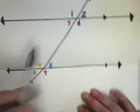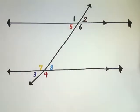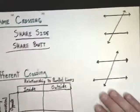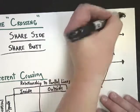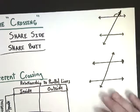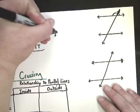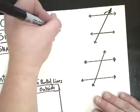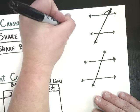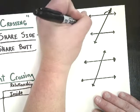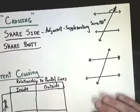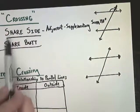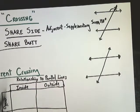If two angles share a crossing and they share a side, they are supplementary — which means if you add them up they equal 180 degrees. So the first determination is: if they're on the same crossing and they share a side, their values add up to 180.